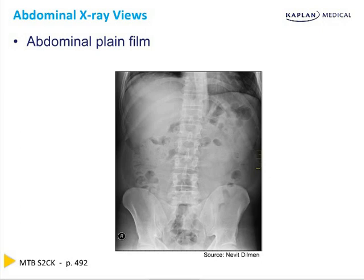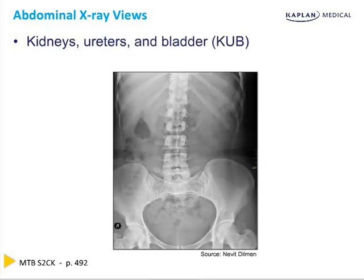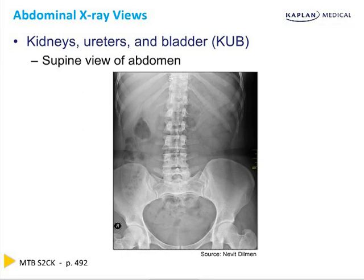There are two standard abdominal X-ray views you should be familiar with. The first is an upright abdominal plane film, which gives visualization of the abdomen and the top of the pelvis. Note the multiple areas of lucency within the abdominal cavity — this is air within the bowel, a normal finding. You may also be able to visualize stool in a constipated patient, but constipation is better diagnosed via patient history and physical exam. The second type is called a KUB film, which stands for kidneys, ureters, and bladder — a supine view of the abdomen useful for detecting dilated loops of bowel caused by a small bowel obstruction.